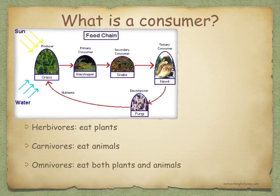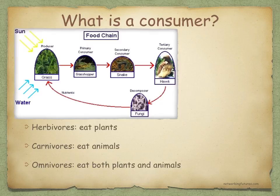Animals can only gain energy and nutrients by eating other organisms. Those that eat plants are called herbivores, those that eat animals are called carnivores, and those that eat both plants and animals are called omnivores. Herbivores are also referred to as primary consumers, and they're eaten by secondary consumers. Tertiary consumers and quaternary consumers are usually predatory, but they may also be scavengers or parasites.